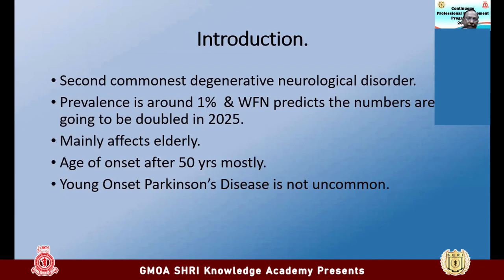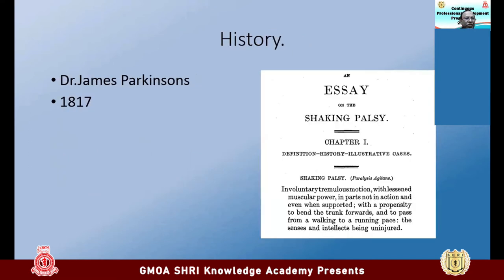This condition mainly affects those after 50 years of age, though we also see a lot of patients with Parkinsonism currently coming at around 35 to 50 as well, so it is not uncommon in young patients. This condition was first described 204 years ago by Dr. James Parkinson. It was the French neurologist Charcot who named this condition and gave full credit to him.